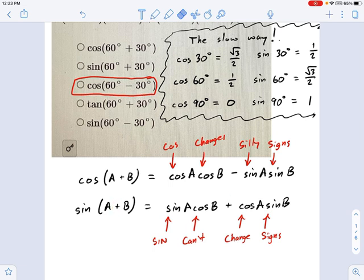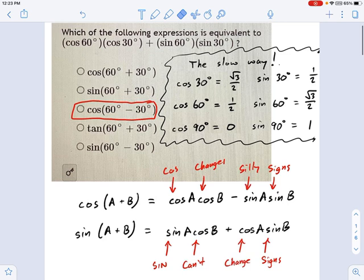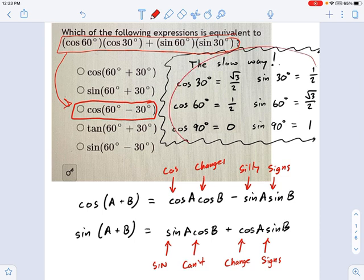So one way or another in this problem, you're going to find yourself using either cosine changes the silly sines or sines can't change sines to condense this formula right here into one of these other formulas. And that'll actually save you a lot of time compared to the slow way method.